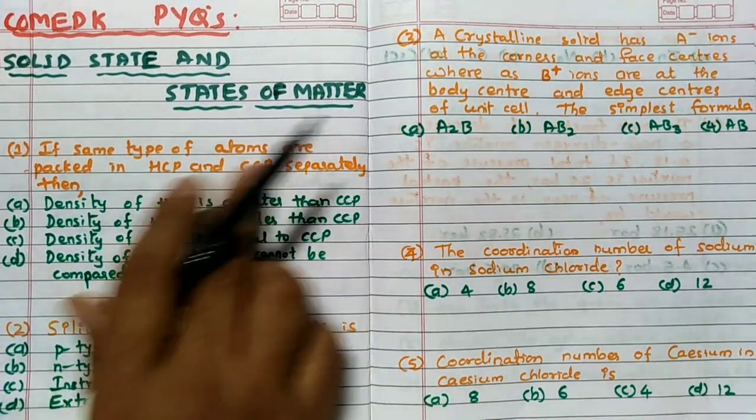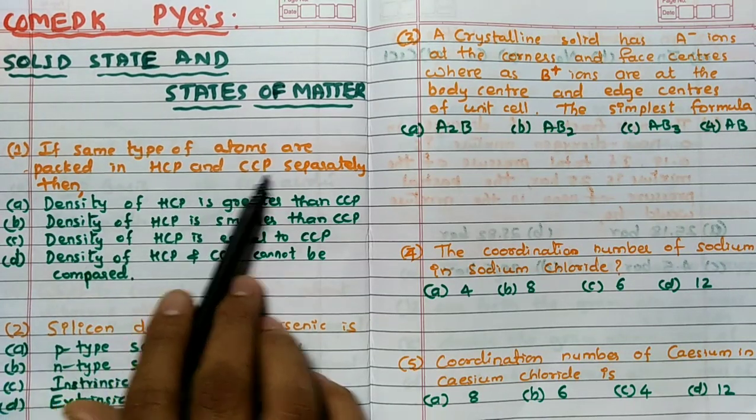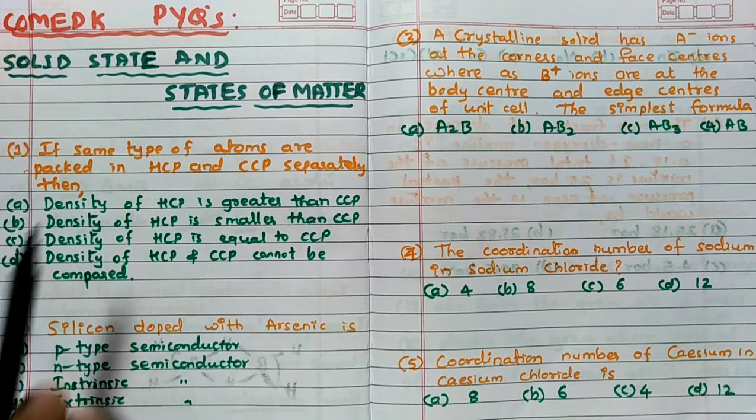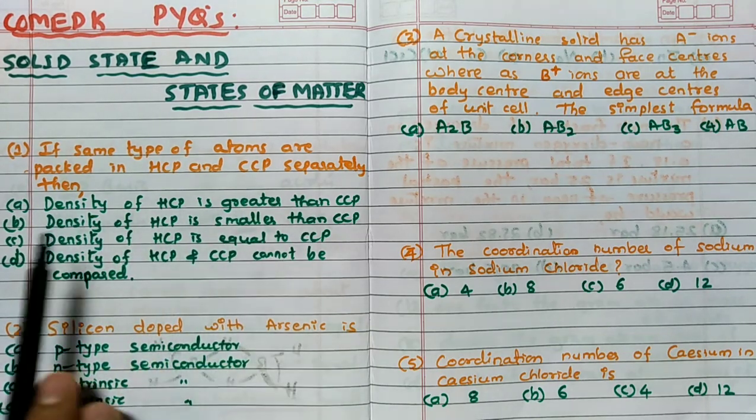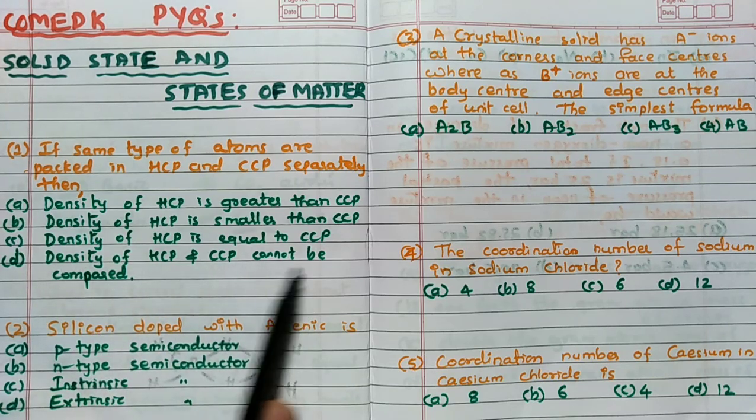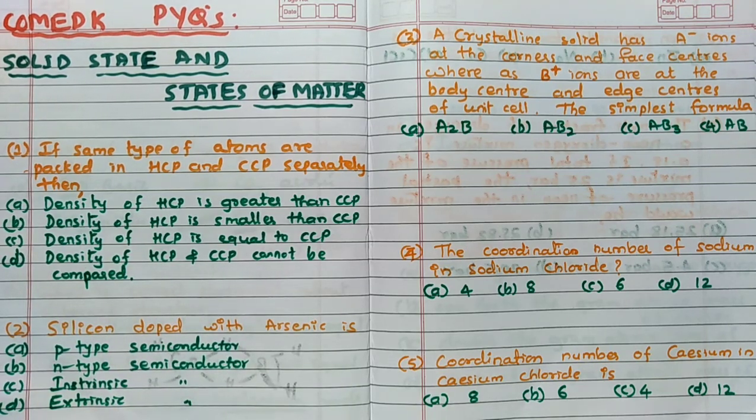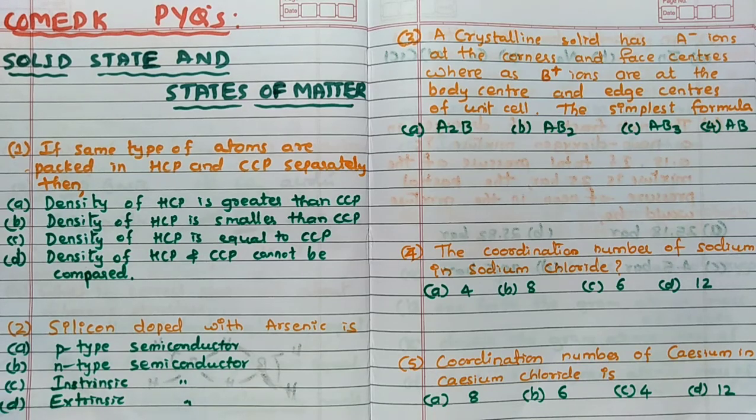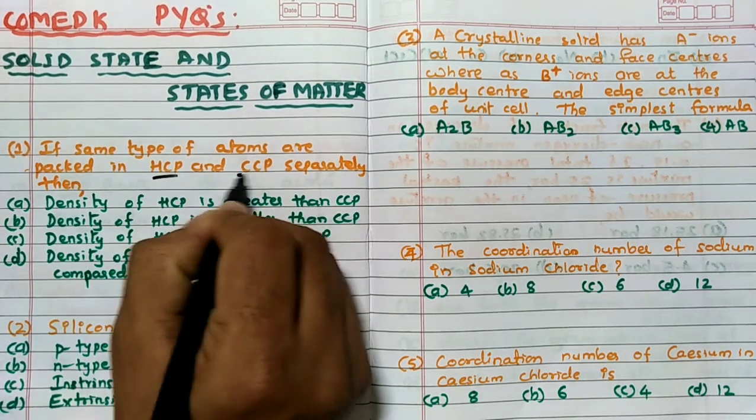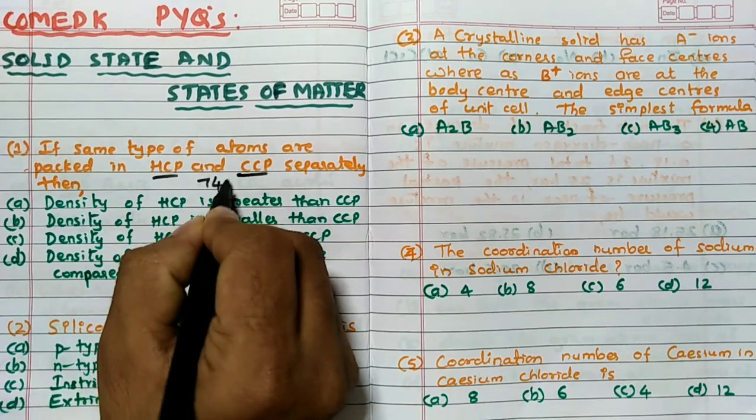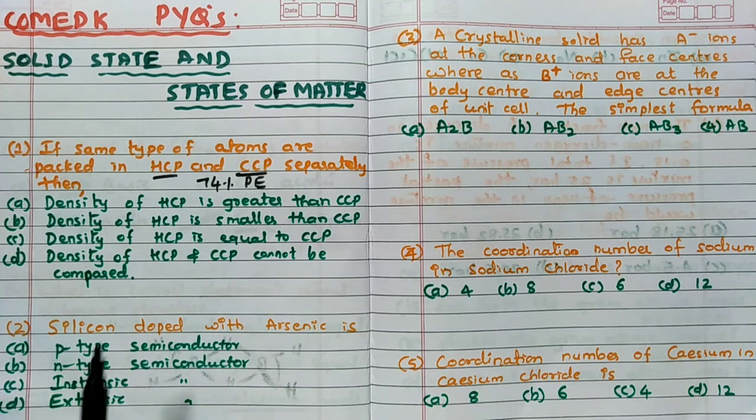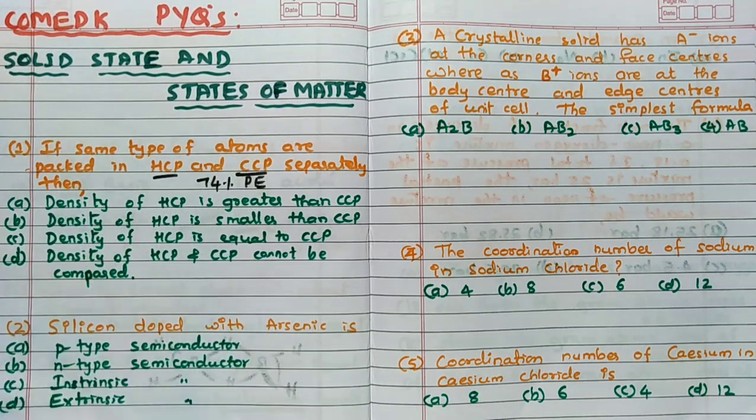Now if same type of atoms are packed in HCP and CCP separately, then density of HCP is greater, smaller than CCP, equal to CCP, or cannot be compared. What is the correct answer? See, in case of the textbook also we have seen HCP and CCP both are having 74% packing efficiency.